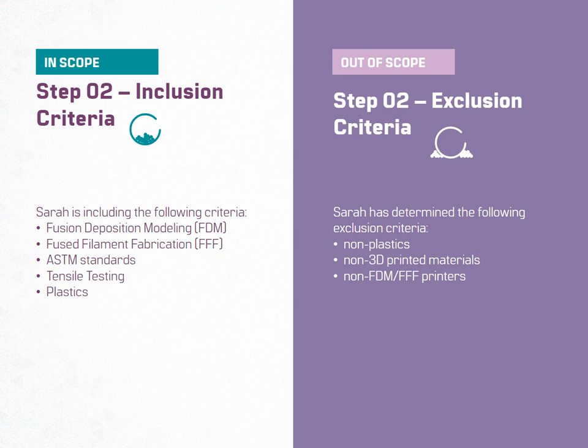She also wants to include the applicable ASTM standards for testing traditional plastic. These are the standards that specify the three different test specimen geometries, and she wants to see if her hypothesis — that no rationale for their use in 3D printing mechanical testing has been published — holds. She only wants to focus on tensile testing, so she will explicitly search for that, and she wants to explicitly search for plastics. She doesn't want to include metals, composites, or ceramics because they have different behaviors and are printed on different 3D printers, so information about them won't be helpful to her question.